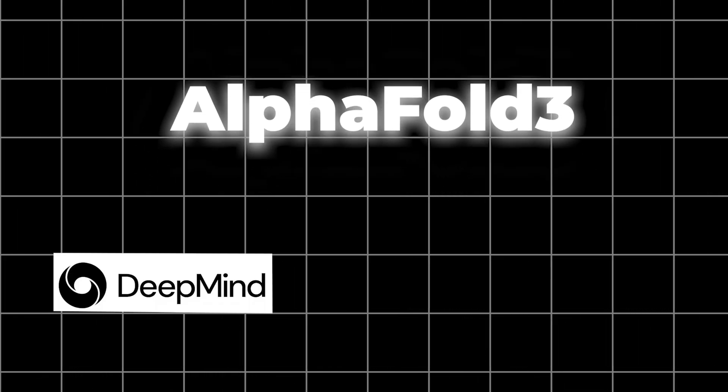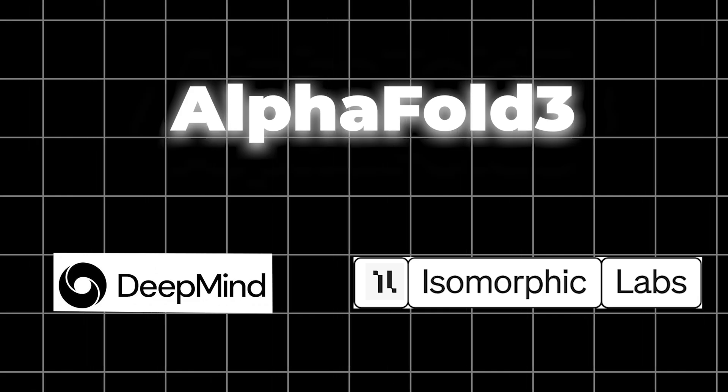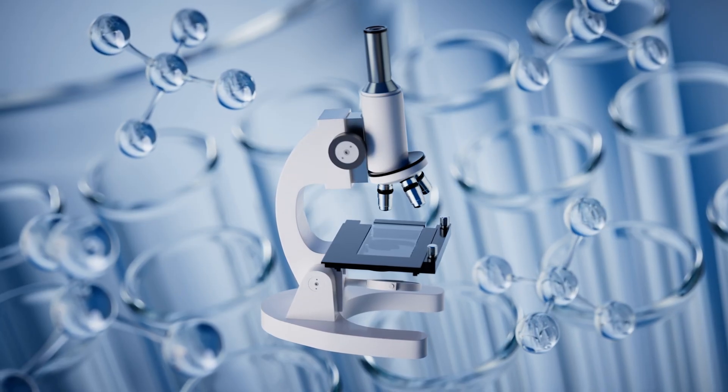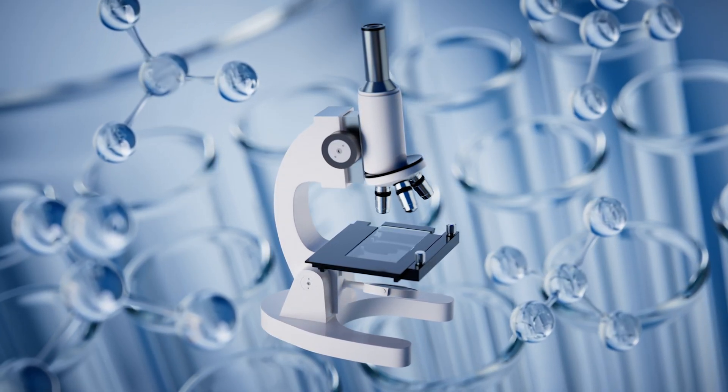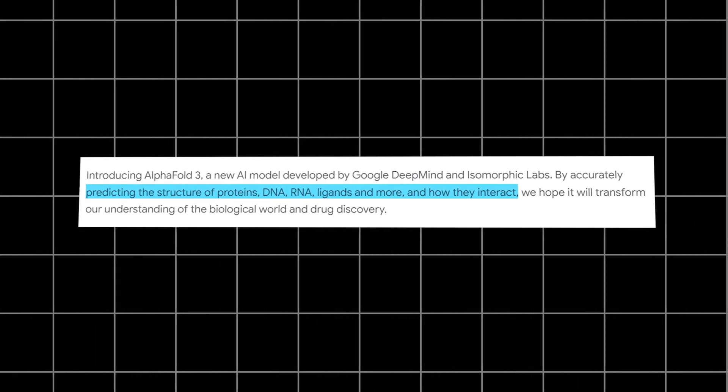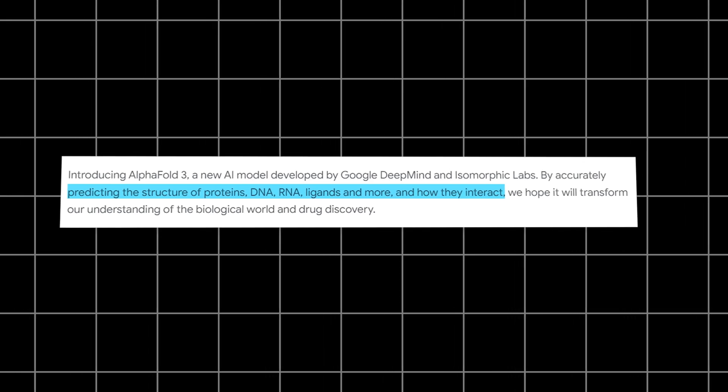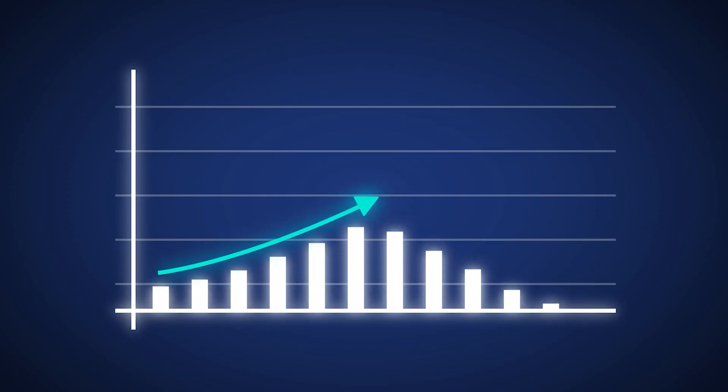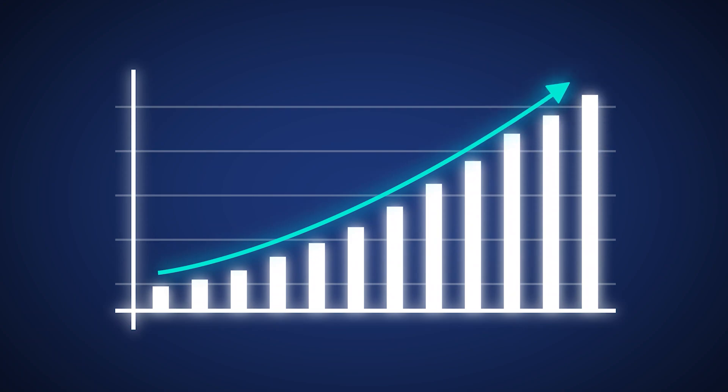AlphaFold3 is a powerful AI model created by Google DeepMind and Isomorphic Labs. It's like a super-powered microscope that can predict the shapes and interactions of all these different molecules. Not just proteins, but also DNA, RNA, and even small molecules like drugs. This incredible accuracy is a huge leap forward compared to anything we had before.